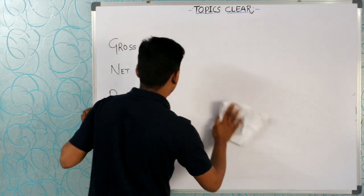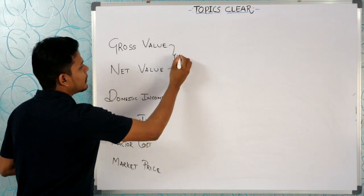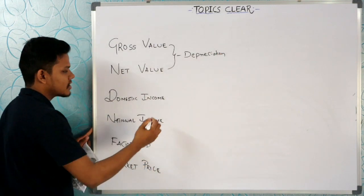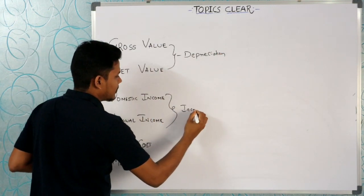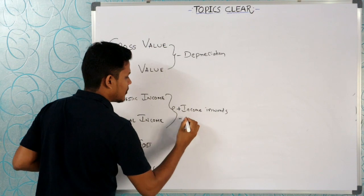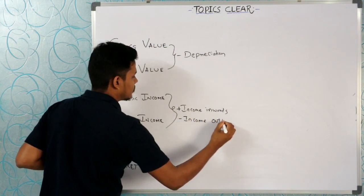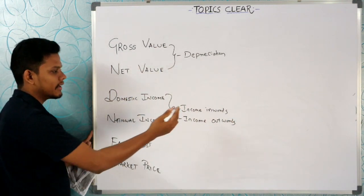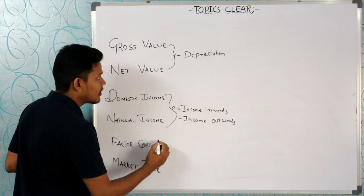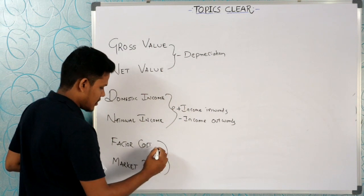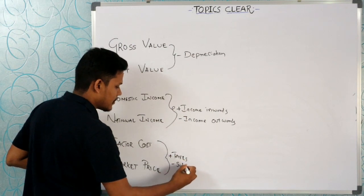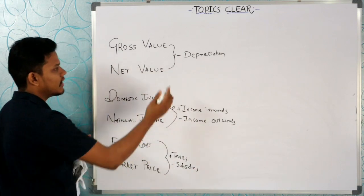So, gross value minus net value gives basic depreciation. Domestic and national income: domestic is income within boundaries, national adds income from abroad minus income outwards. Factor cost versus market price involves taxes plus subsidies, minus depreciation.